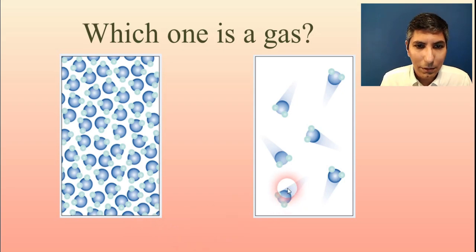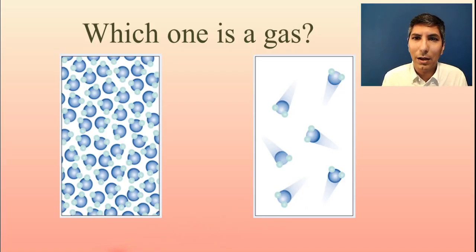Also, we have these little streaks behind each molecule, which implies that they're moving fairly quickly. And as we know, gas molecules will most likely be moving faster than molecules of a liquid, higher temperature.